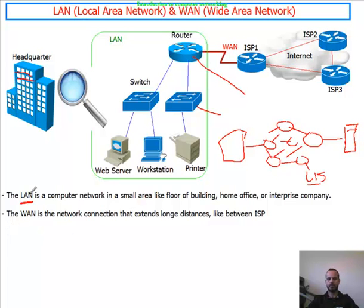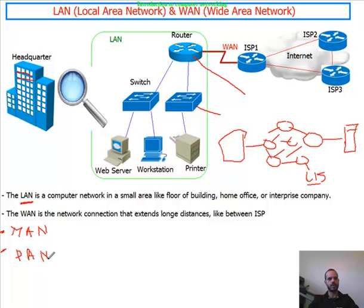We also have other kinds of network types. We have the MAN, which stands for Metropolitan Area Network — it could be between cities. And we have the PAN, the Personal Area Network. For example, if you have Bluetooth devices connected to each other via Bluetooth, this is called a PAN or Personal Area Network.